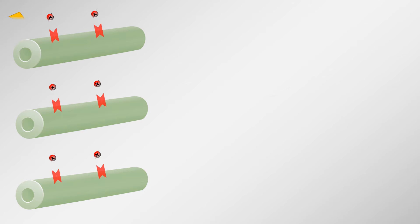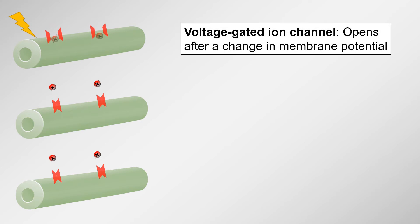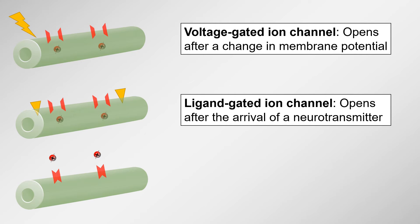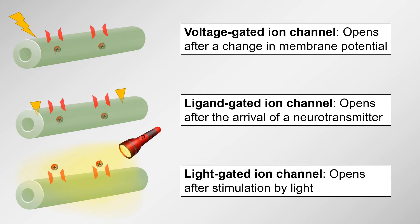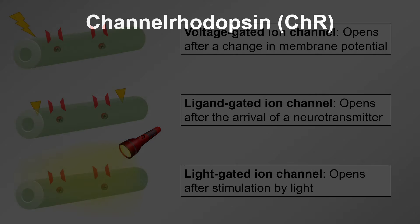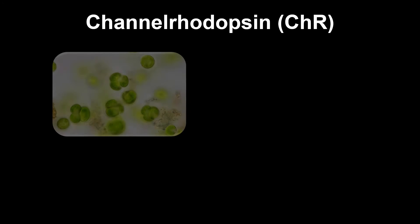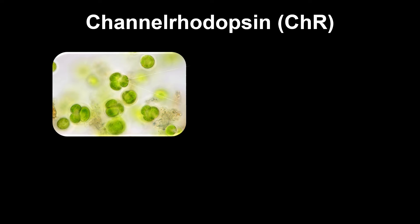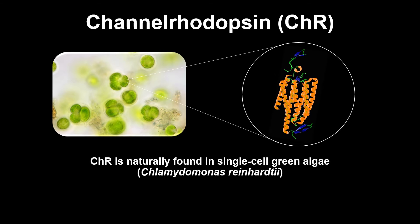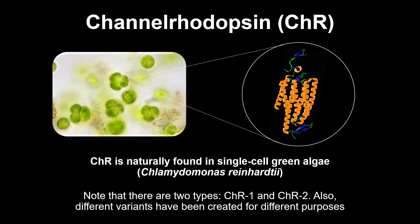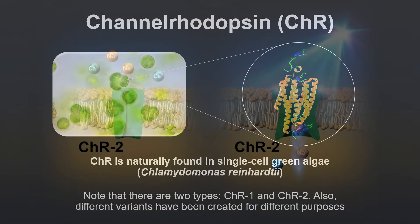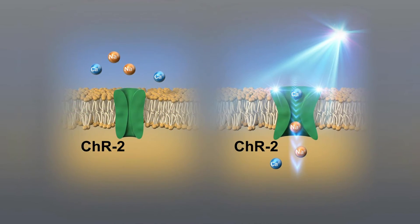Some of these ion channels react to a change in membrane potential, and others react to the arrival of a neurotransmitter. But most importantly for optogenetics, some ion channels react to the stimulation of light. The most well-known light-sensitive protein in the field of optogenetics is channelrhodopsin. Channelrhodopsin naturally occurs in green algae and is sensitive to blue light. So if you have a neuron that has channelrhodopsin, you only need to shine blue light on it and it will fire.